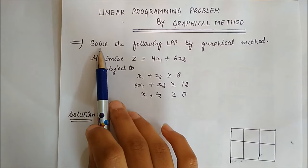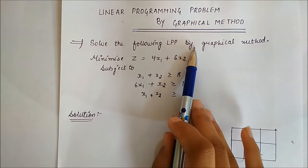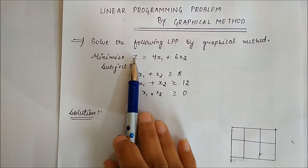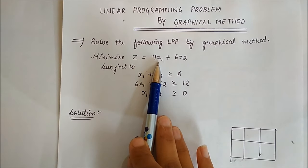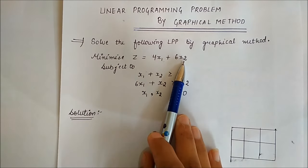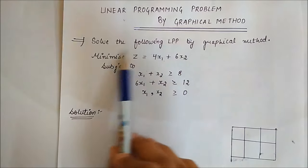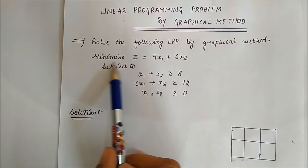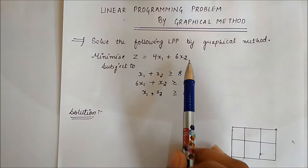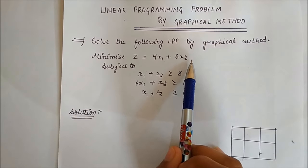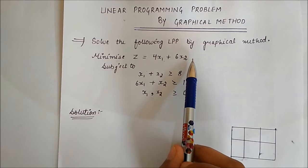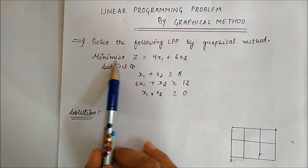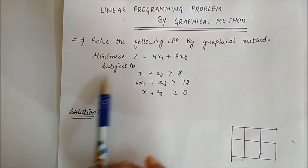So the question is: solve the following LPP by graphical method. Minimize z equals 4x1 plus 6x2. This is the objective function and the objective is minimization of cost. We can have maximization of profit or minimization of cost — in this question we have minimization of cost.